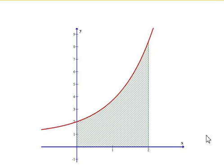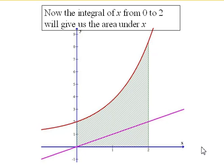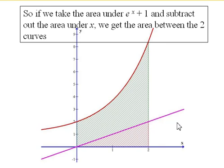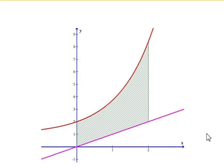Let's add the graph of y equals x to our plot. Doing the integral from 0 to 2 will give us the area under x as well. You can see that in red here. We want the area between the two curves. So what we can do is take the area that's under e to the x plus 1 and subtract out the area that's under x, and that will give us the area in between.